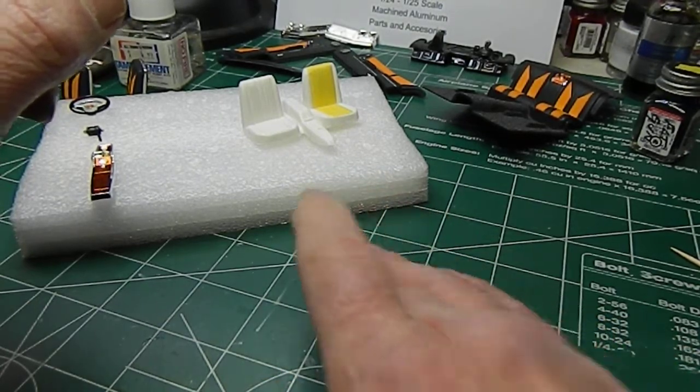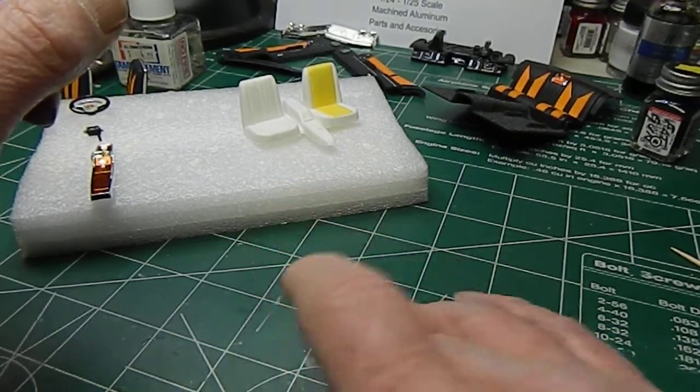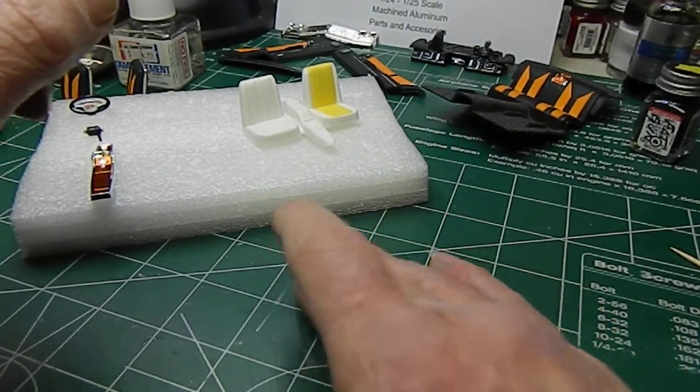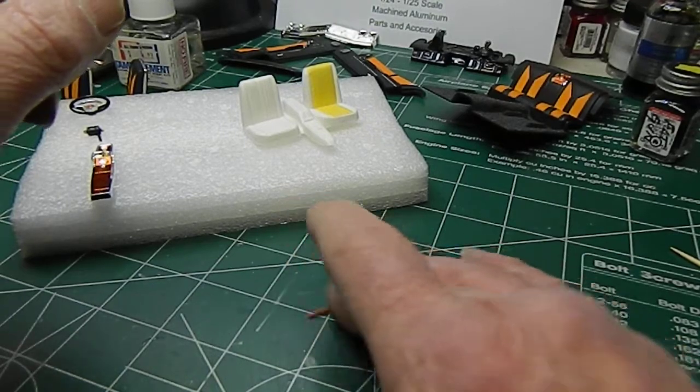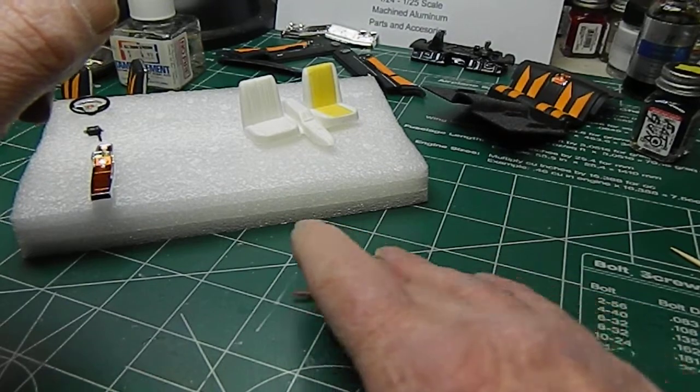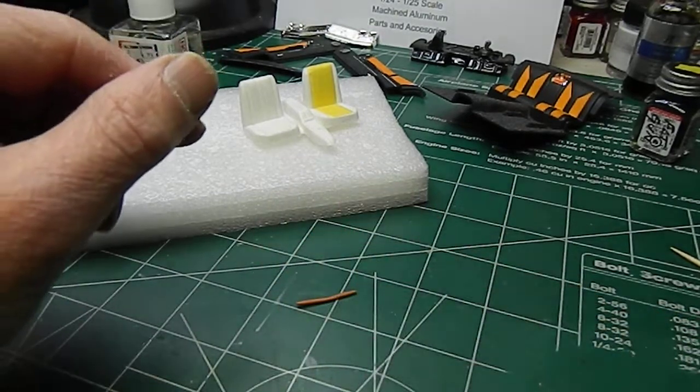You don't want it too big because the bigger you make it, the more Elmer's adhesive tack you've got to work with. Alright, close enough.